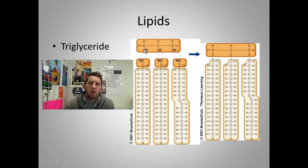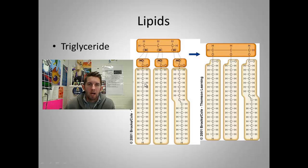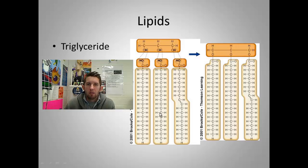But recall in carbohydrates, the ratios were a one-to-two-to-one ratio of carbon to hydrogen to oxygen. This isn't the case in lipids. You can see that lipids have a vast amount of these carbon-hydrogen bonds — these bonds between carbons and hydrogens are very energetic. That's why lipids provide us with so much more energy per mass than carbohydrates, because every time you break one of these bonds, a great deal of energy is released that your body can utilize.